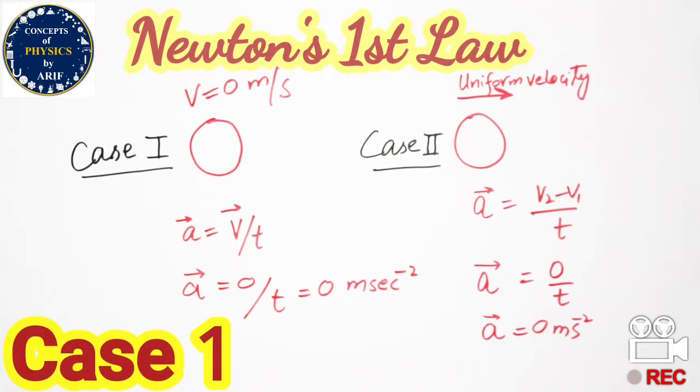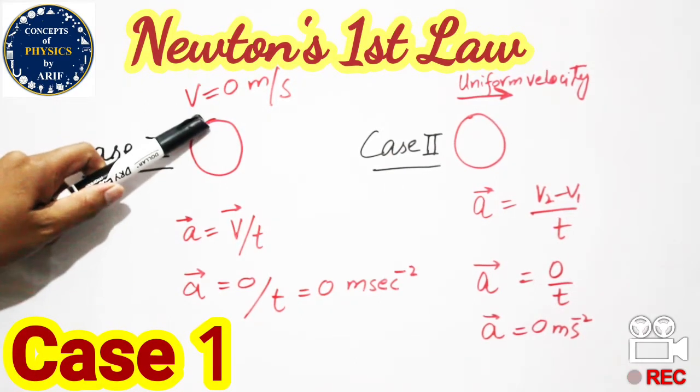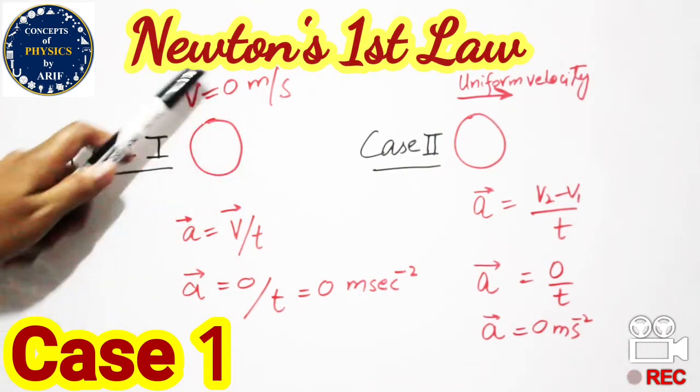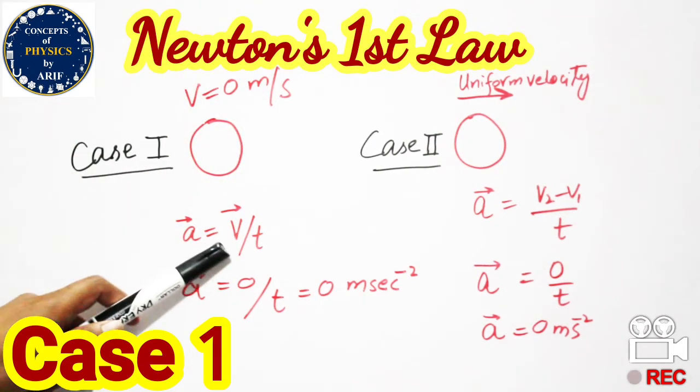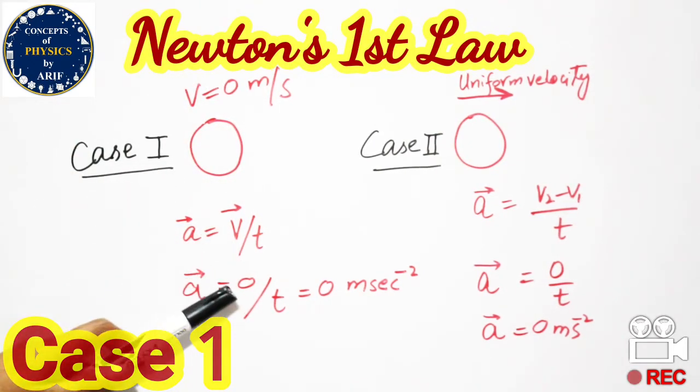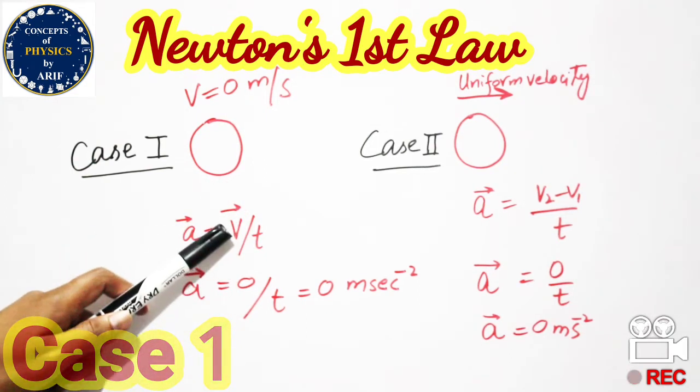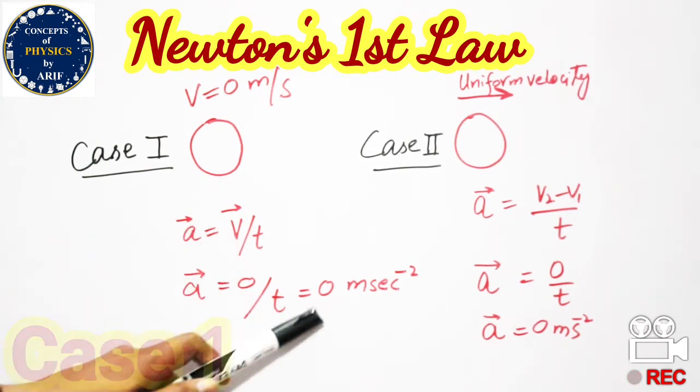unless an unbalanced force is applied on it. In Case 1, when the body is at rest, the velocity of the body will be zero since it is not moving. Acceleration equals v by t. Since velocity is zero, a equals 0 by t, and acceleration will be zero.